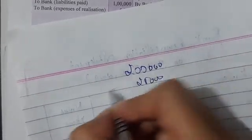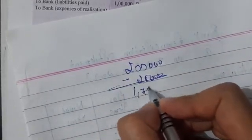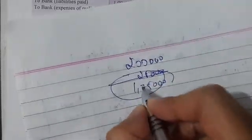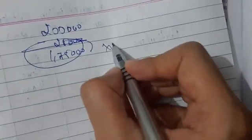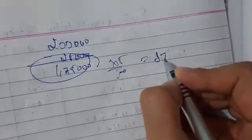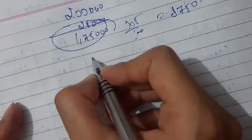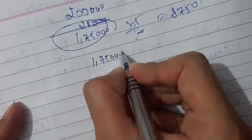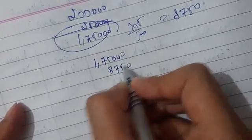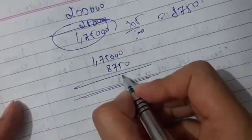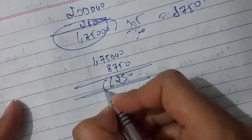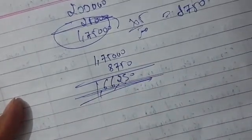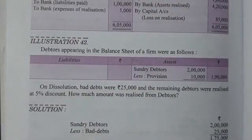After deducting 25 thousand bad debts from total debtors, remaining debtors are 1 lakh 75 thousand. On these, a 5% discount is applied: 5% of 1,75,000 is 8,750. Subtracting 8,750 from 1,75,000 gives the final amount received from debtors as 1,66,250 rupees.